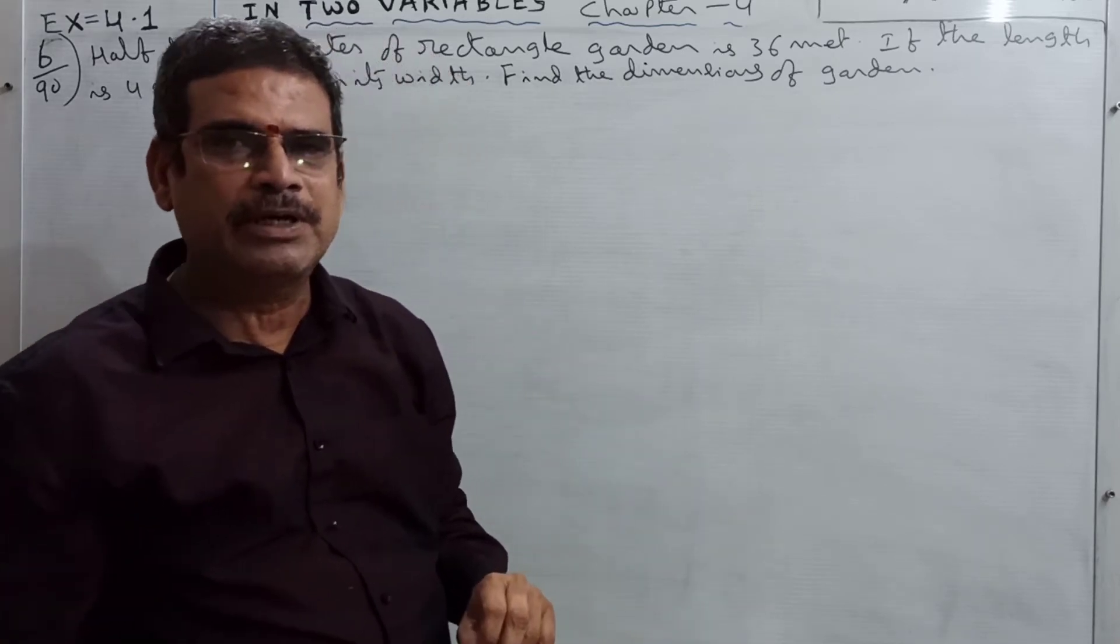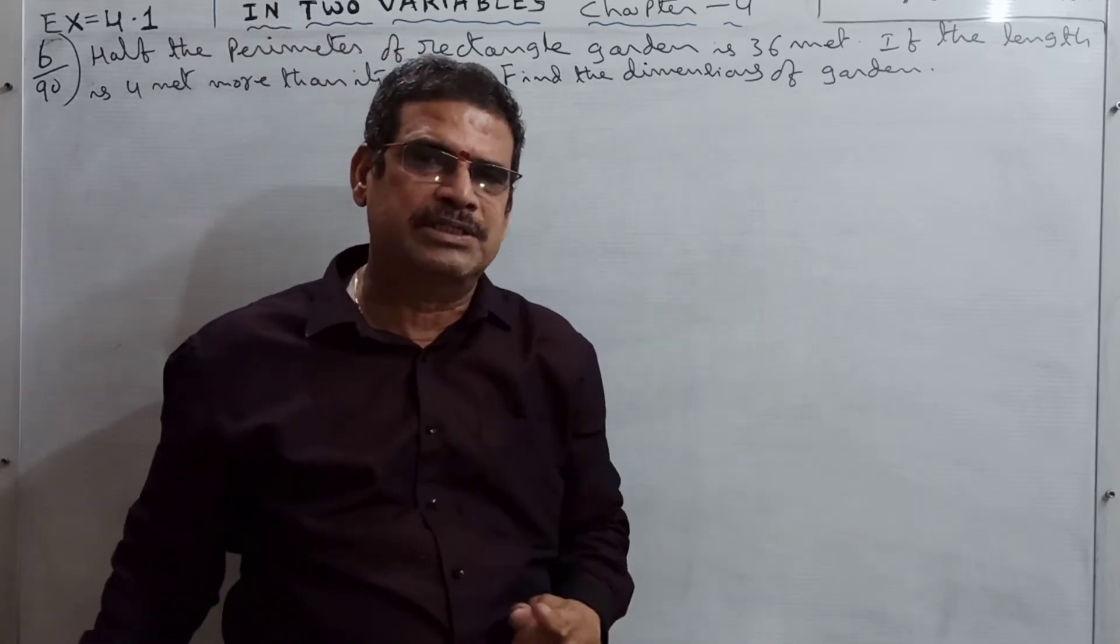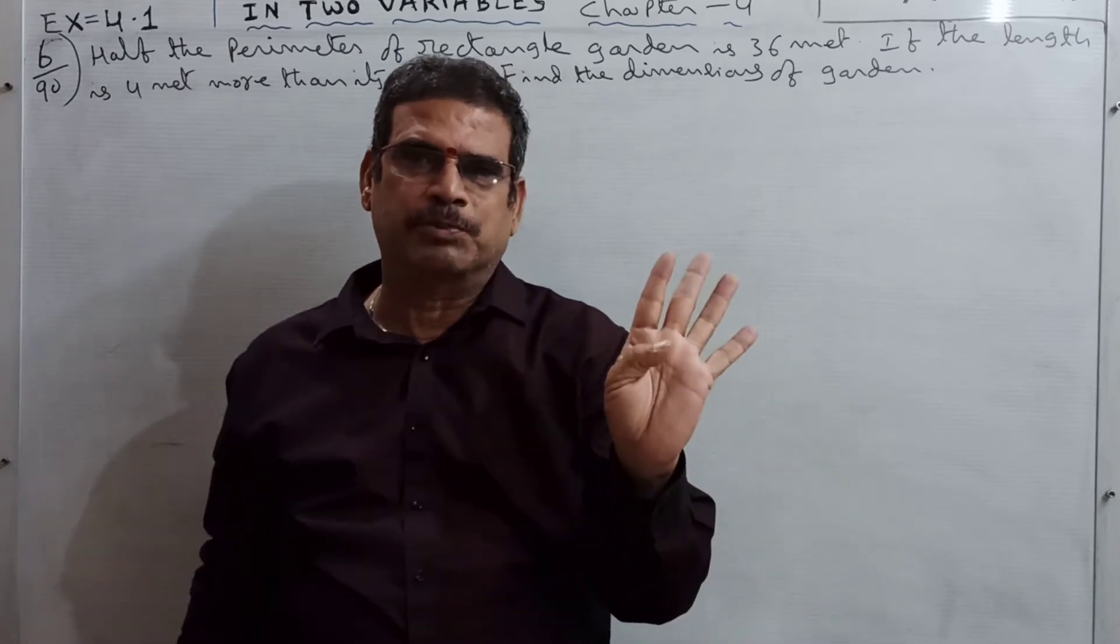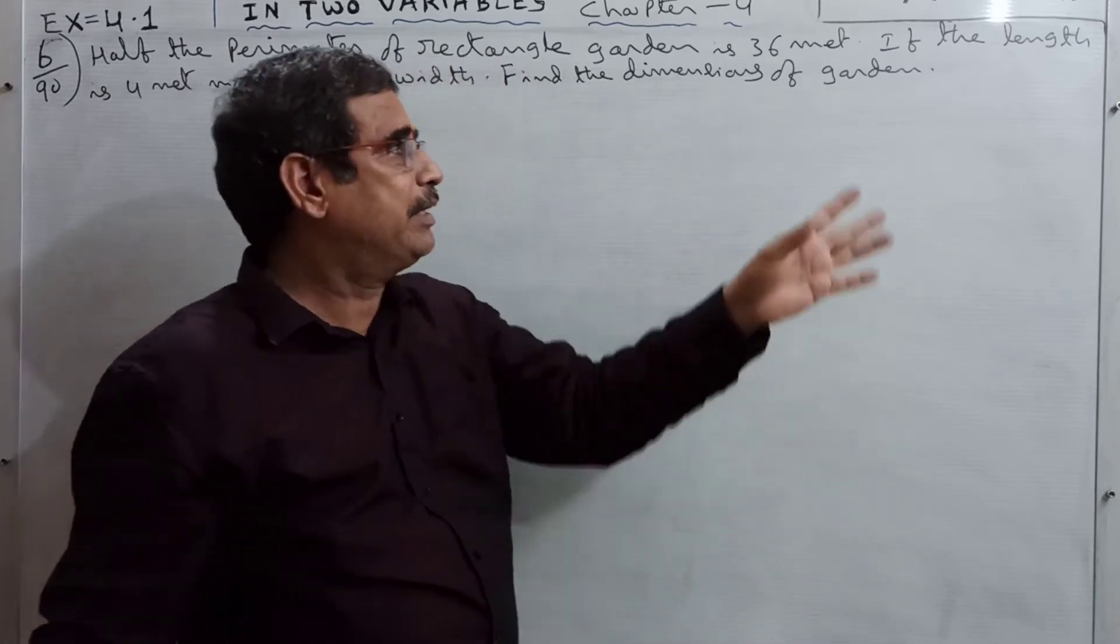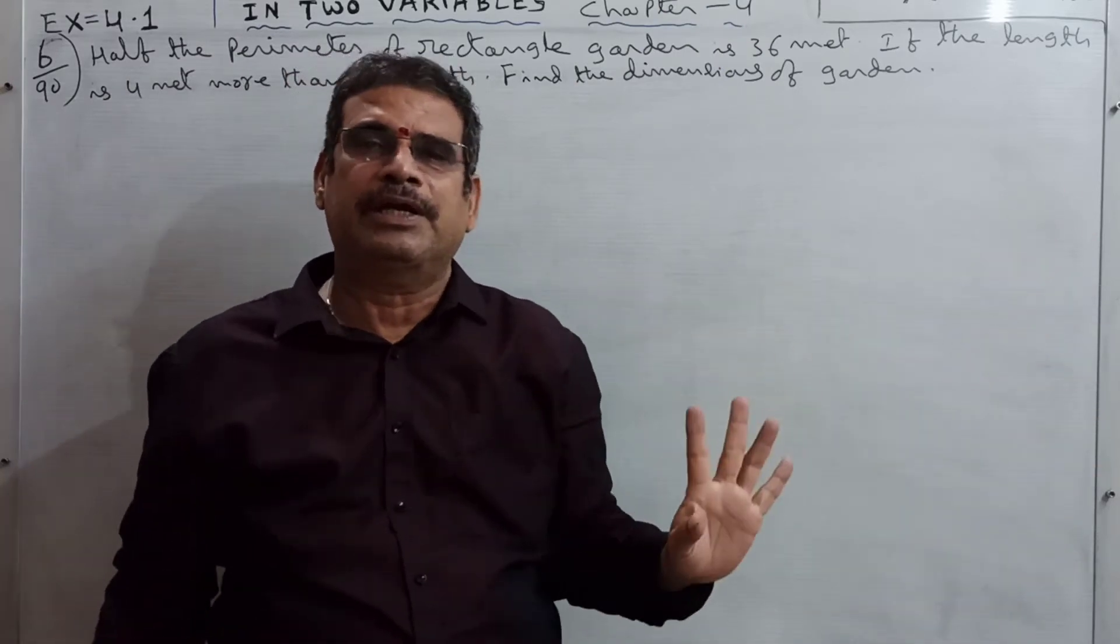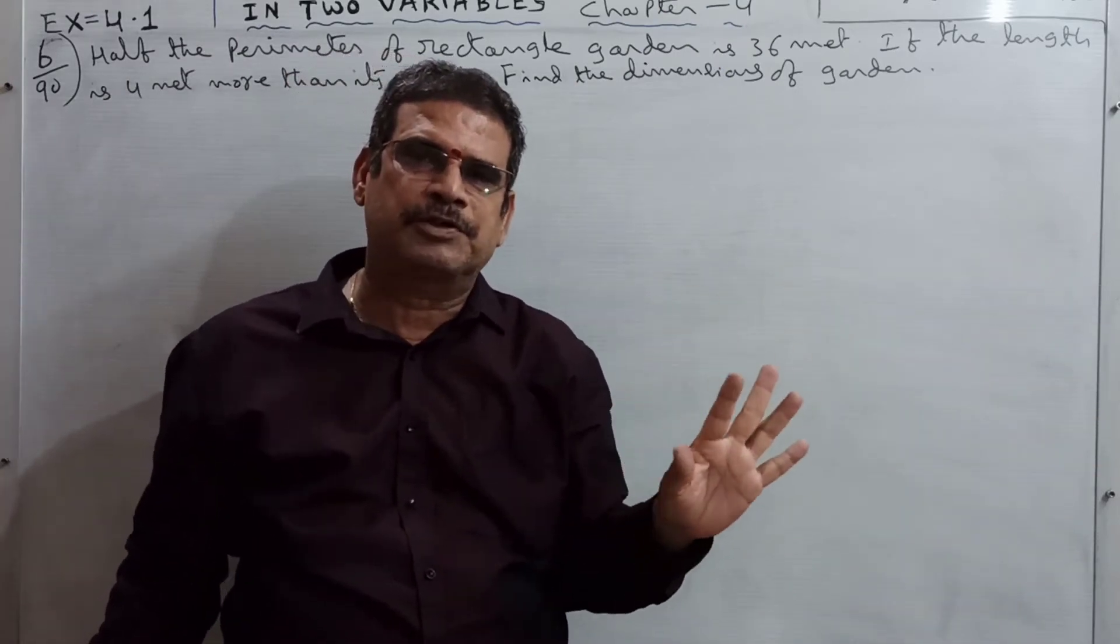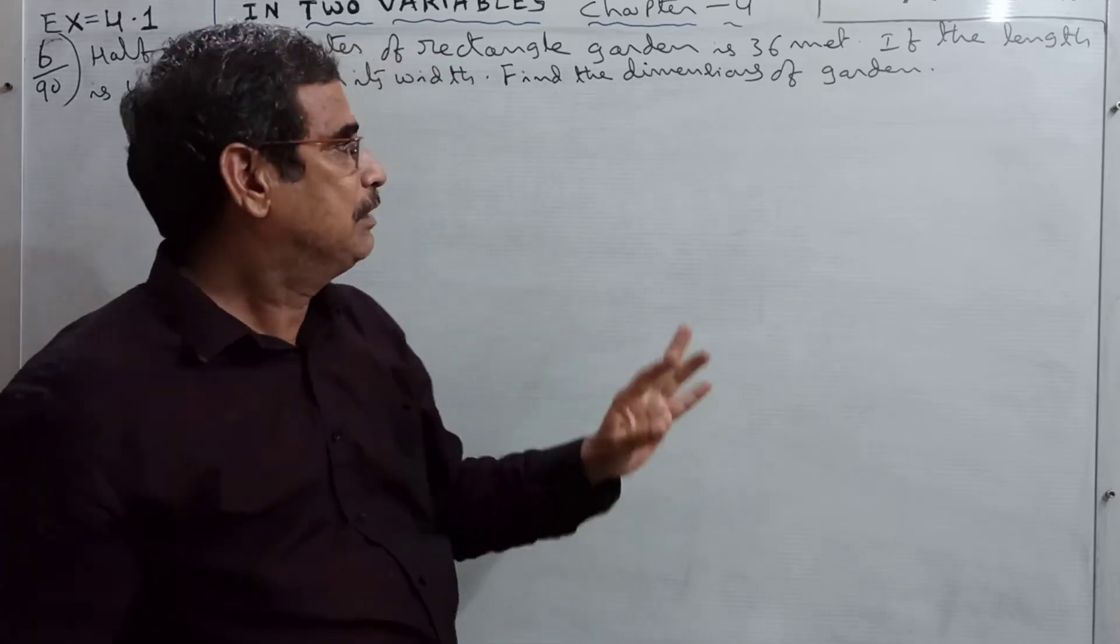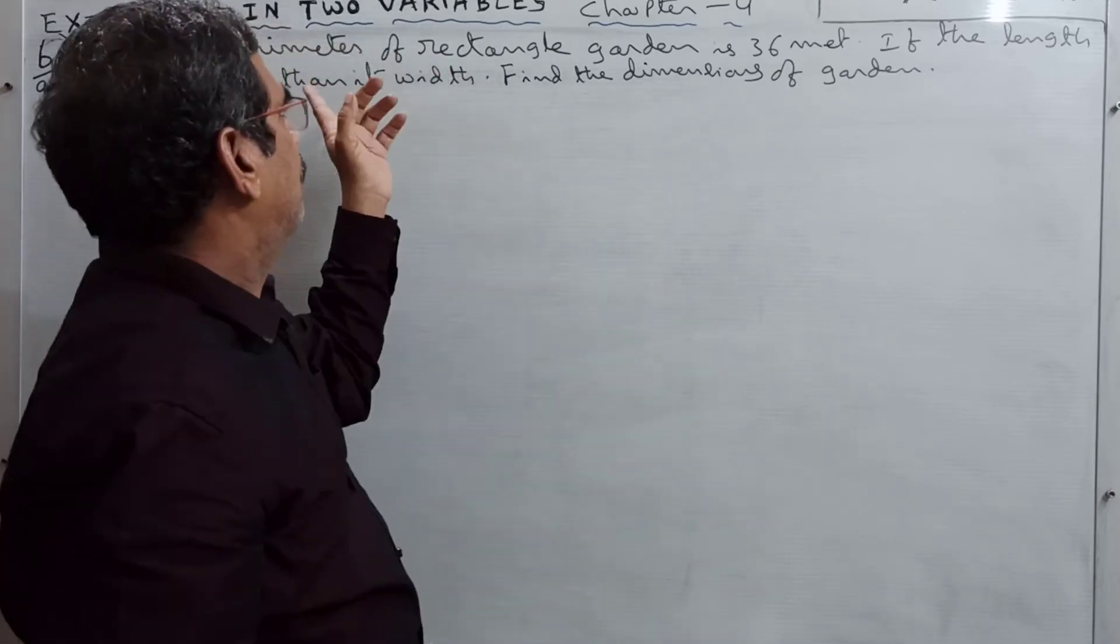Perimeter means boundaries added together. Area means the space inside. That is called area. This is the difference between perimeter and area.